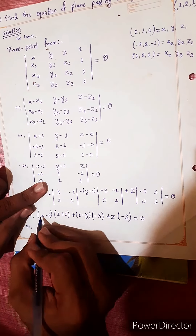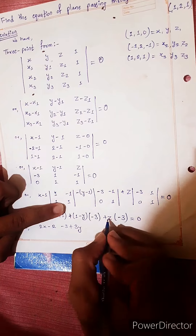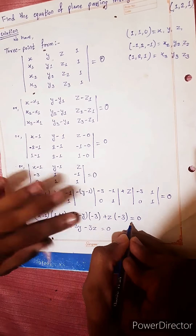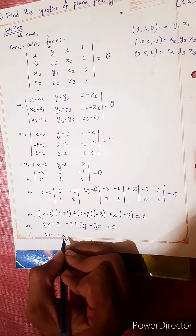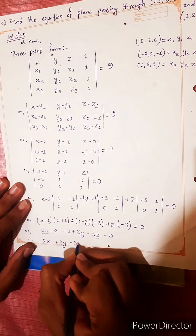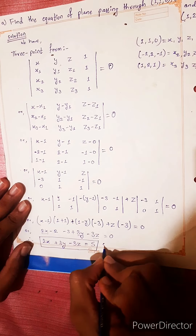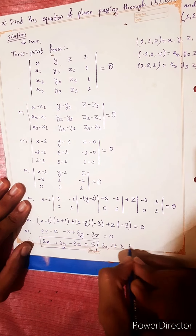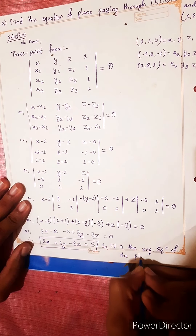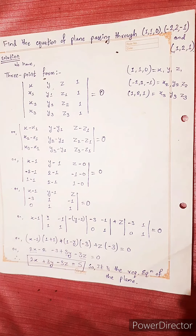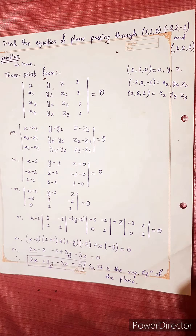Simplifying: 2x minus 2, minus 3, minus 3y, minus 3z equals 0. Therefore 2x plus 3y minus 3z equals 5. That is the required equation of the plane. Thank you.